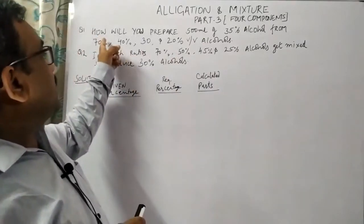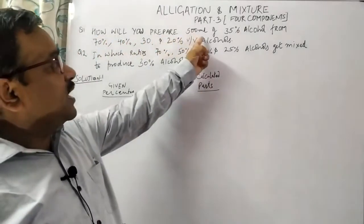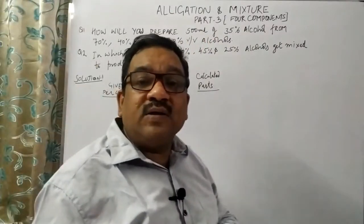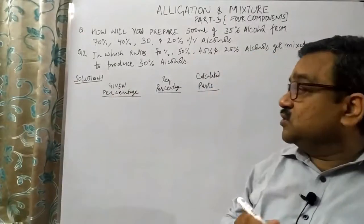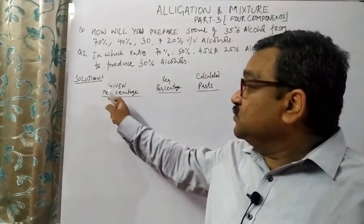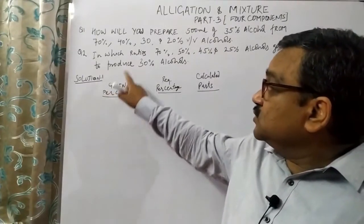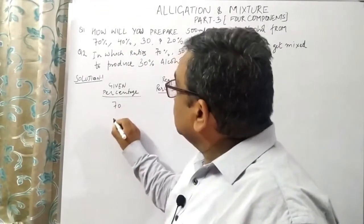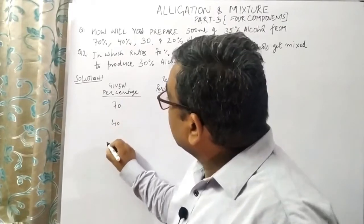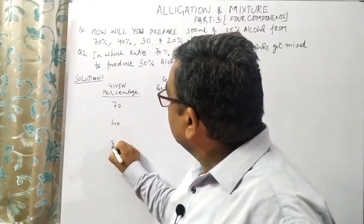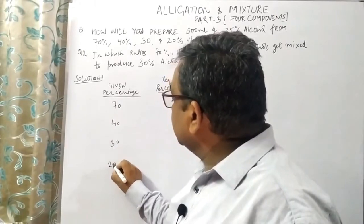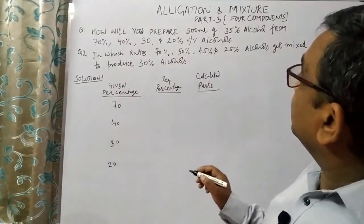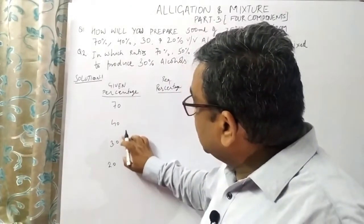The first example I am going to take is: how will you prepare 500 ml of 35% alcohol from 70%, 40%, 30%, and 20% alcohol? So how can you solve this? First, what are the given percentages: 70, 40, 30, and 20. What is the required strength we have to prepare? We have to prepare 35%, so 35% lies in between.